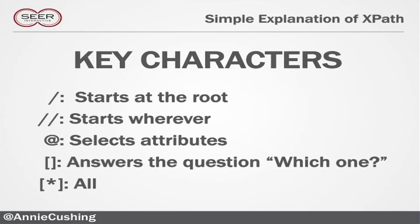There are some key characters. The forward slash tells you to start scraping at the root. You can use a double forward slash, which lets you start scraping wherever you want. The at sign tells you that you're selecting an attribute — 'at' attribute, that helps me a lot. Square brackets answer the question 'which one?' — all the qualifiers that narrow down which element go inside the brackets. And the asterisk is just a wildcard.